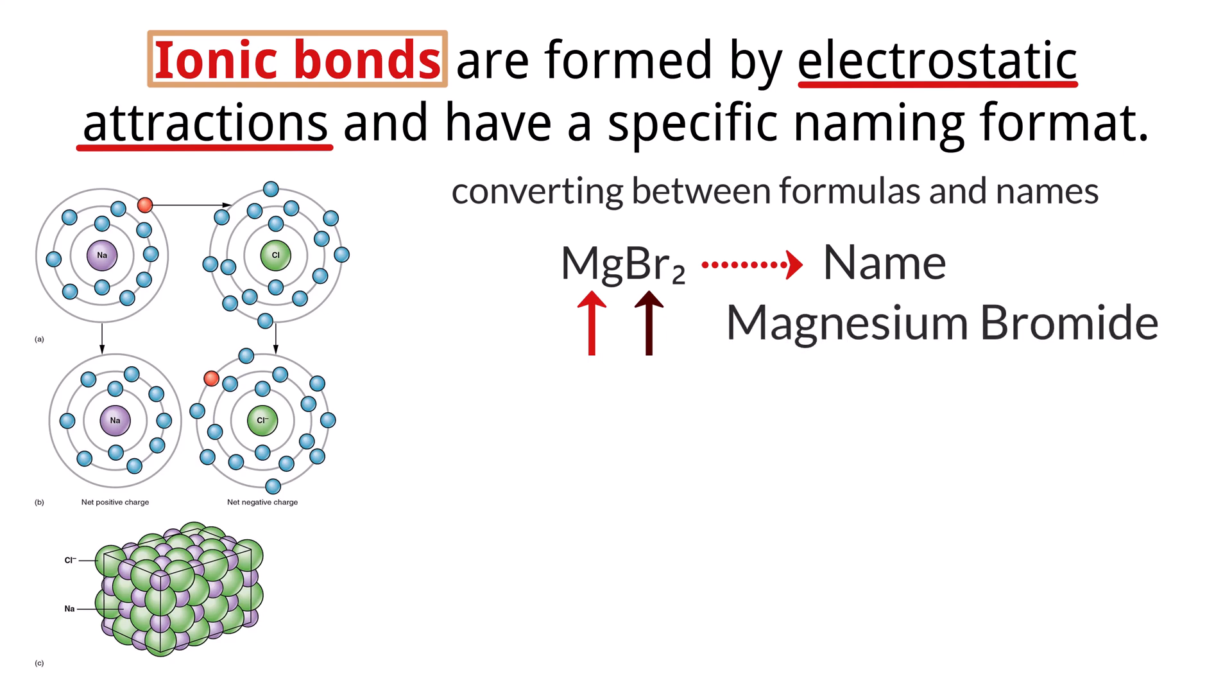Conversely, if you were given the name, such as potassium sulfide, you need to be able to create the formula. You do this by identifying the cation, potassium, and the anion, sulfide. You then balance their charges using the crisscross method to determine the formula, K2S.